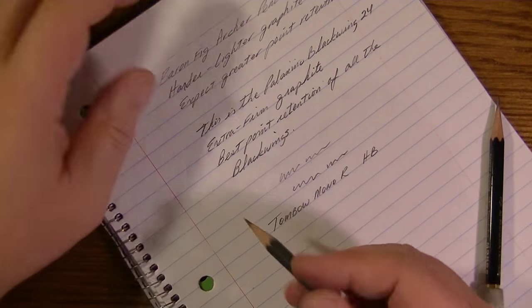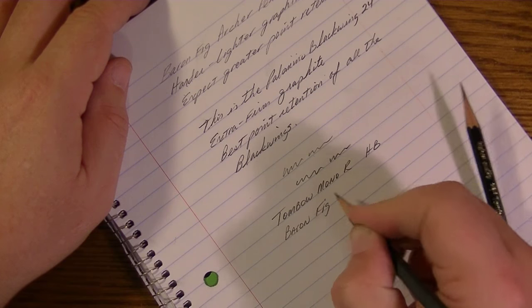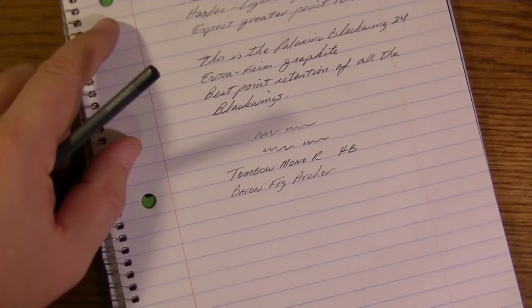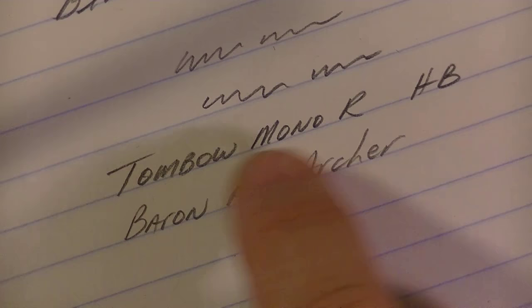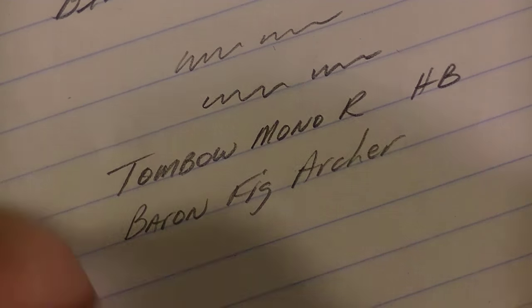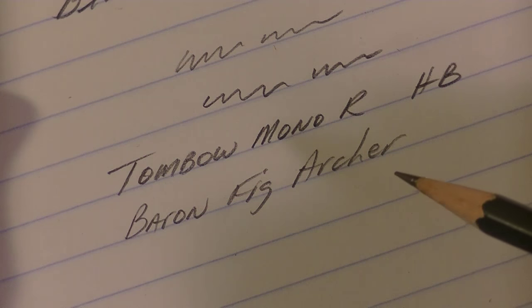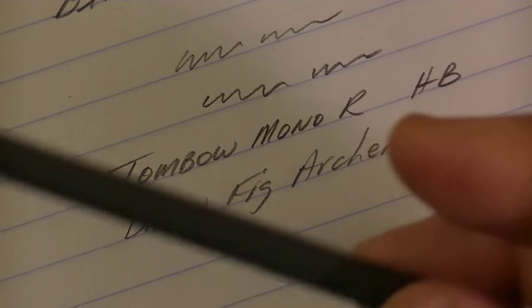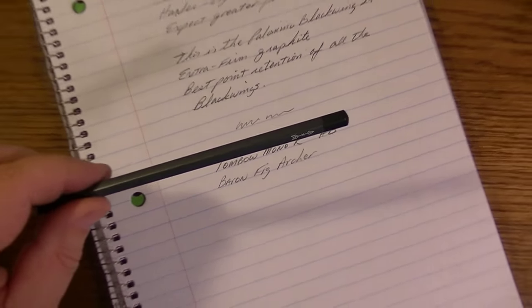And what we'll do is we'll do an MB grading on this. So I can give you an exact rating compared to the Mitsubishi. If I show you how it compares to this Tombow Mono, this is the Tombow Mono R HB pencil. Between the two, the Tombow Mono is softer, darker than the Baron Fig, which feels a little harder and is a little lighter. So they're not identical and yet this one is referred to as an HB. So the question is, how would we rate this one with the MB grading? And that's what I'm going to do next.